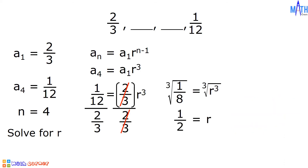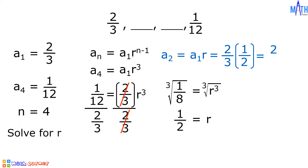Now that we have the common ratio, let us determine the second term. To find a sub 2, let us multiply a sub 1 by r. A sub 1 is equal to 2/3 and r is equal to 1/2. 2 times 1 is equal to 2, and 3 times 2 is equal to 6. Let us simplify 2/6 by dividing the numerator and the denominator by 2. 2 divided by 2 is equal to 1, and 6 divided by 2 is equal to 3. The second term is equal to 1/3.